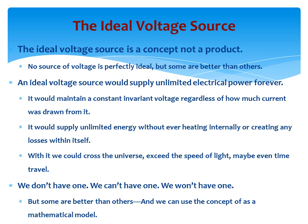An ideal voltage source would supply unlimited electrical power forever. It would maintain a constant, invariant voltage regardless of how much current was drawn from it. It would supply unlimited energy without ever heating internally or creating any losses within itself.